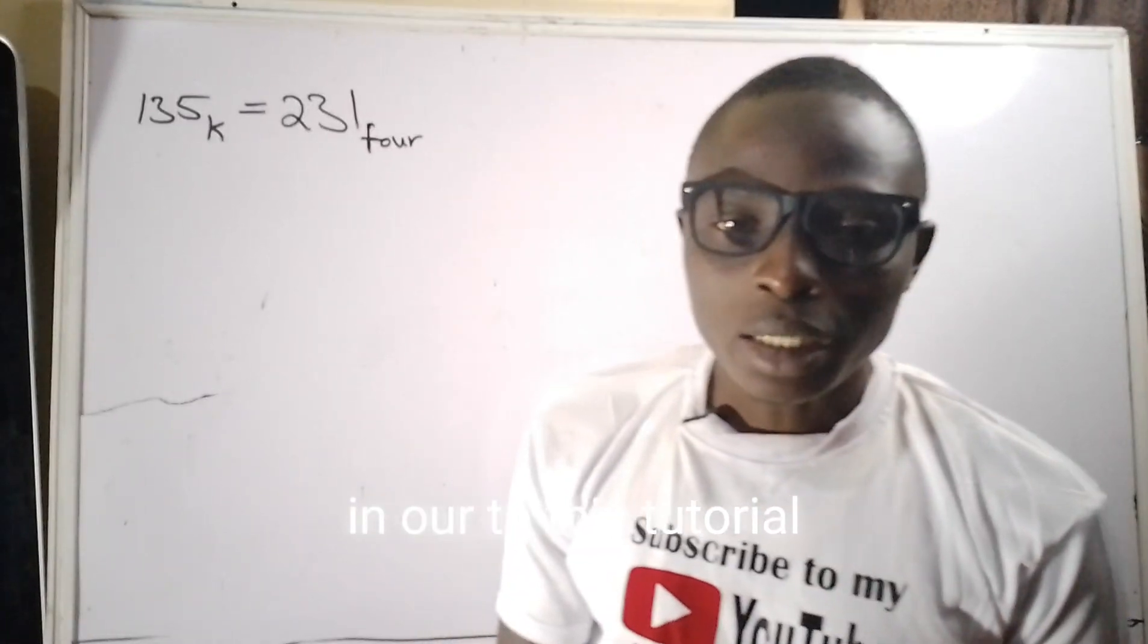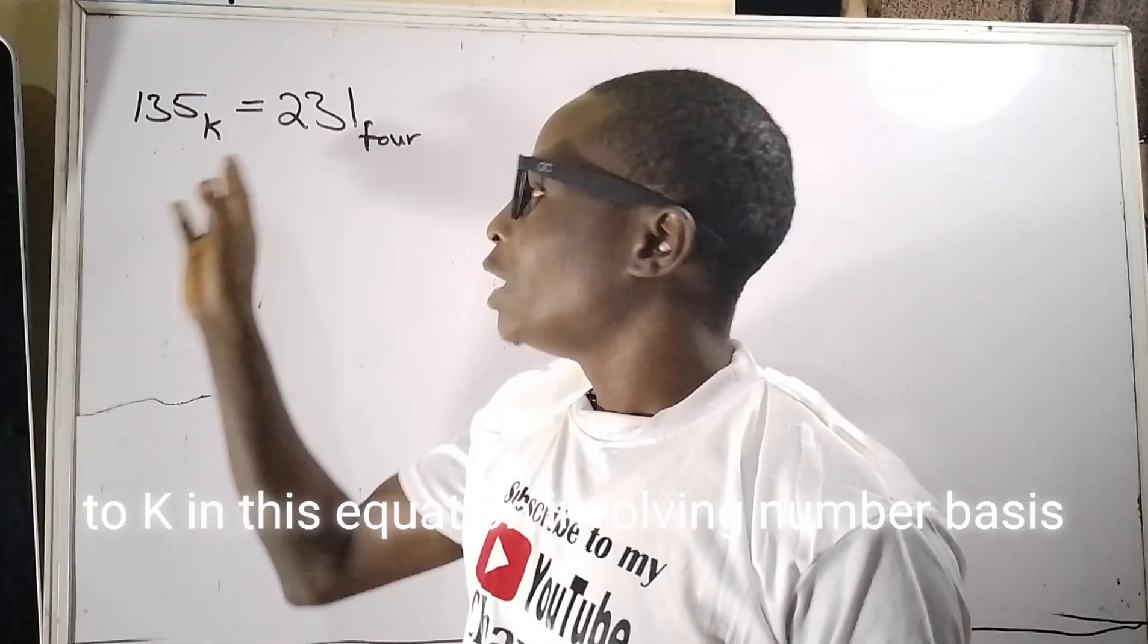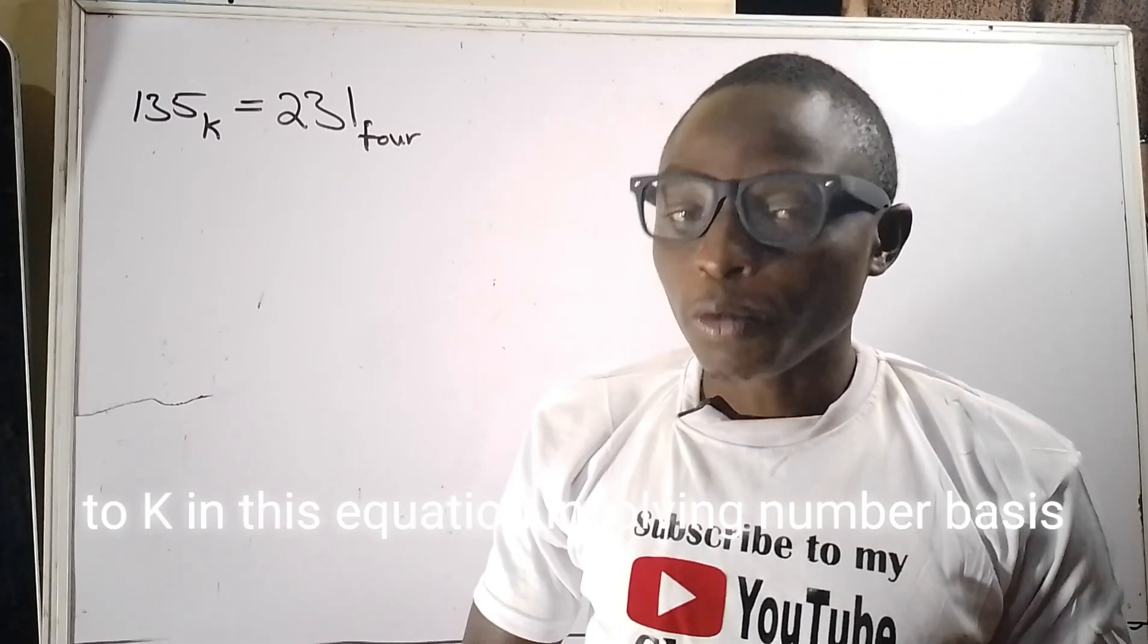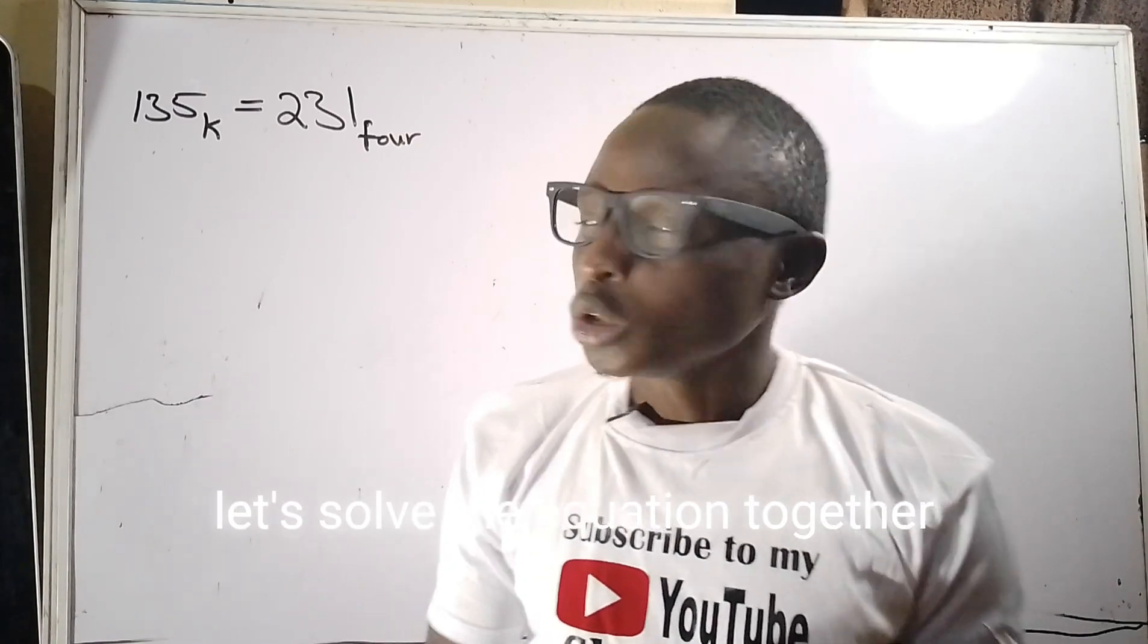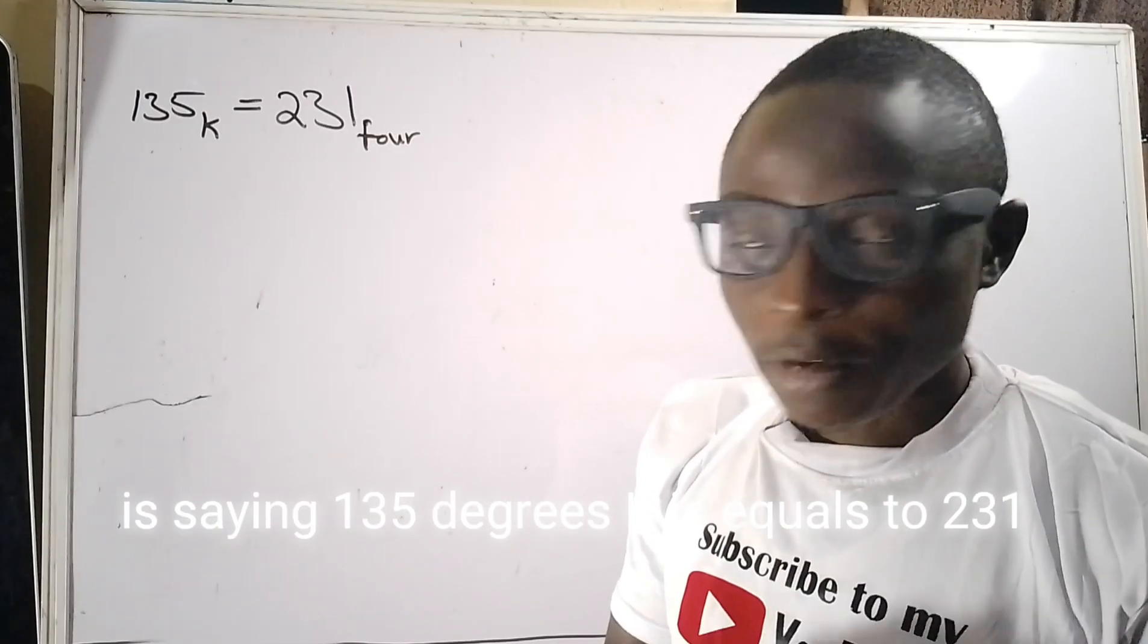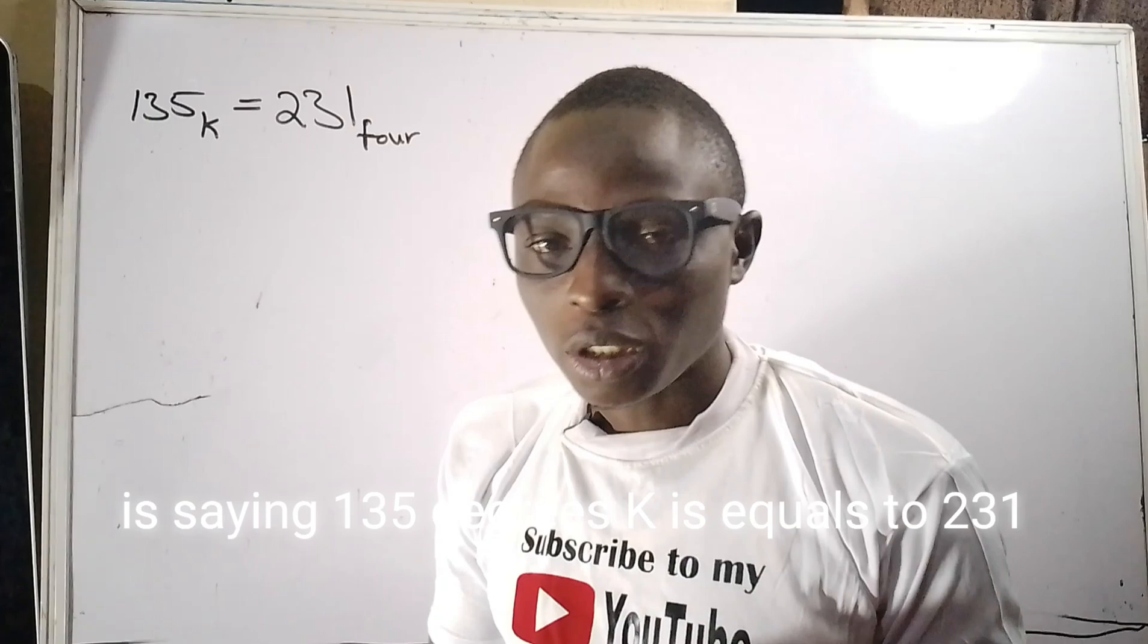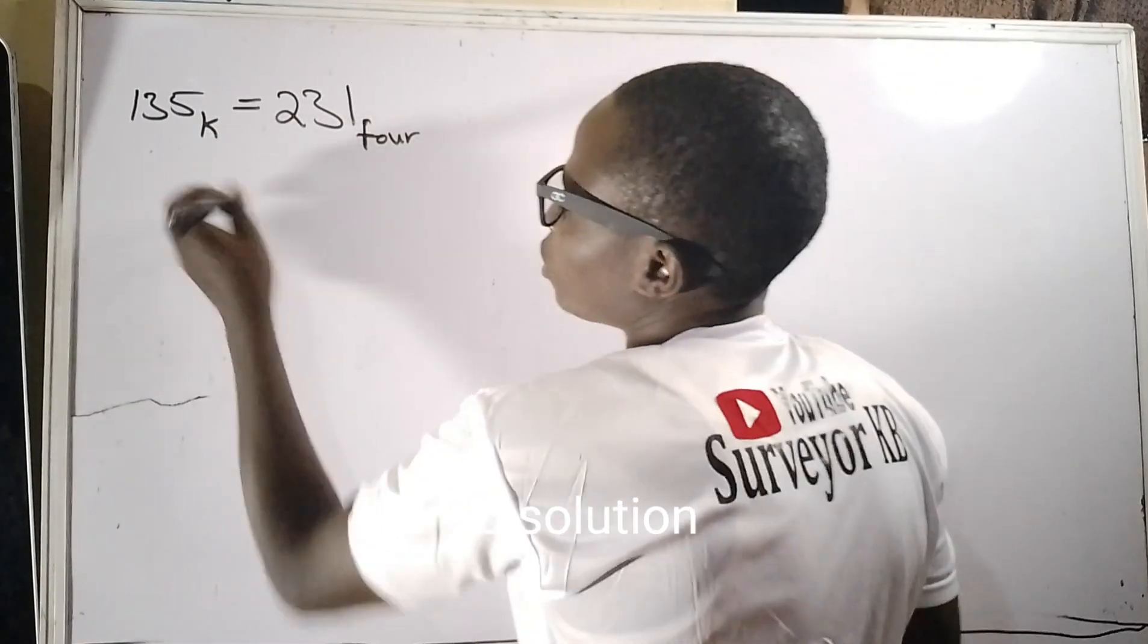In our today's tutorial, we are going to see how we can provide a solution to k in this equation involving number bases. So follow me, let's solve the equation together. The question is saying 135 to base k equals 231 to base 4, and we should find k.